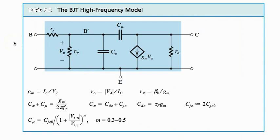Now if we talk about the BJT high frequency model: g_m equals I_C over V_T, C_mu plus C_u is g_m over 2π f_T, and r_0 is again V_A over I_C.